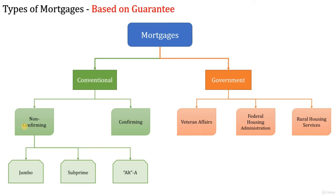Subprime loans are loans given to borrowers with a poor credit history whose credit characteristics do not meet the requirements of Fannie Mae and Freddie Mac. These loans typically have higher down payments and higher interest rates — they are really risky loans and the bank takes on a lot of risk in providing subprime loans. The target market is borrowers with a blemished credit history and a credit score less than 680 or 630, who all belong to the subprime market.